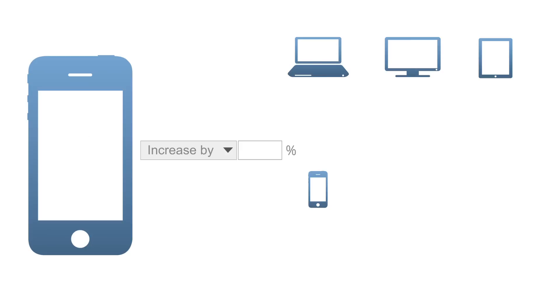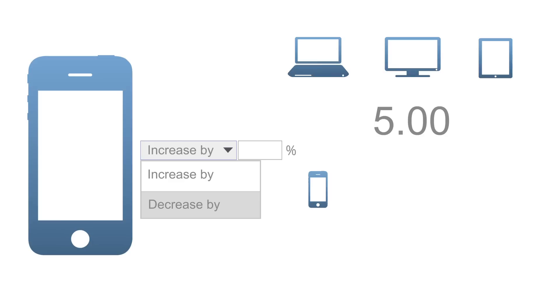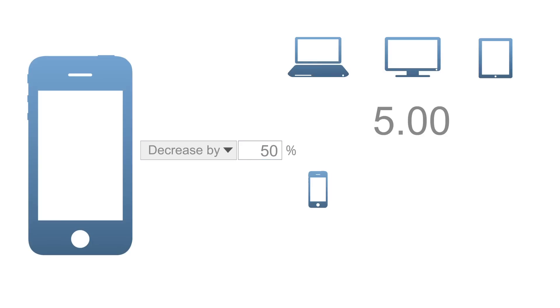For example, if your default bid is $5 and you set mobile bids to decrease by 50%, then mobile bids will be 50% less than your default bid, or $2.50.